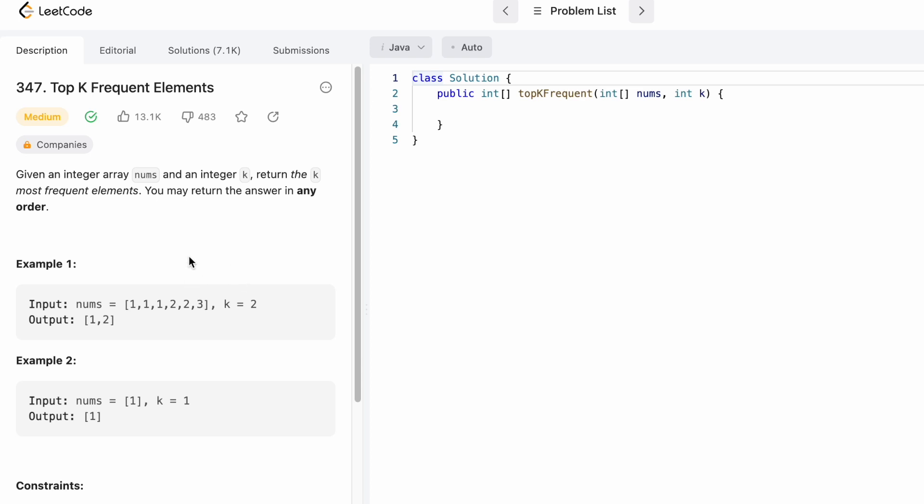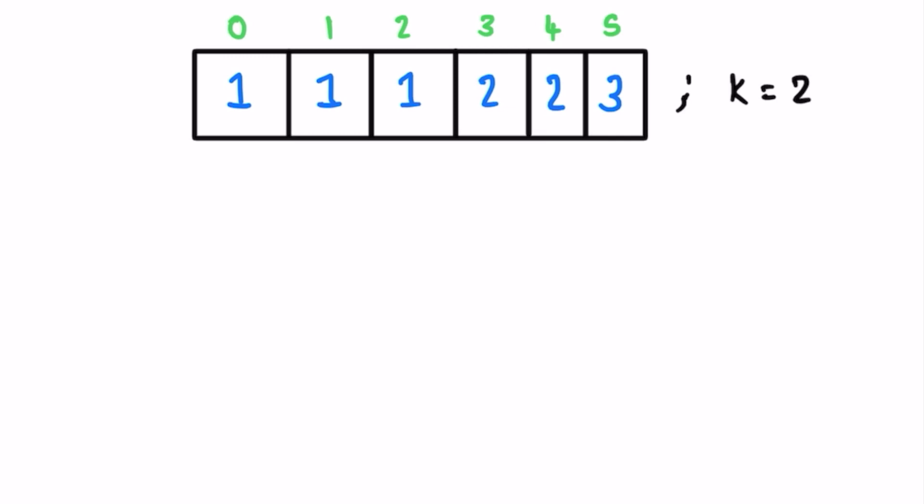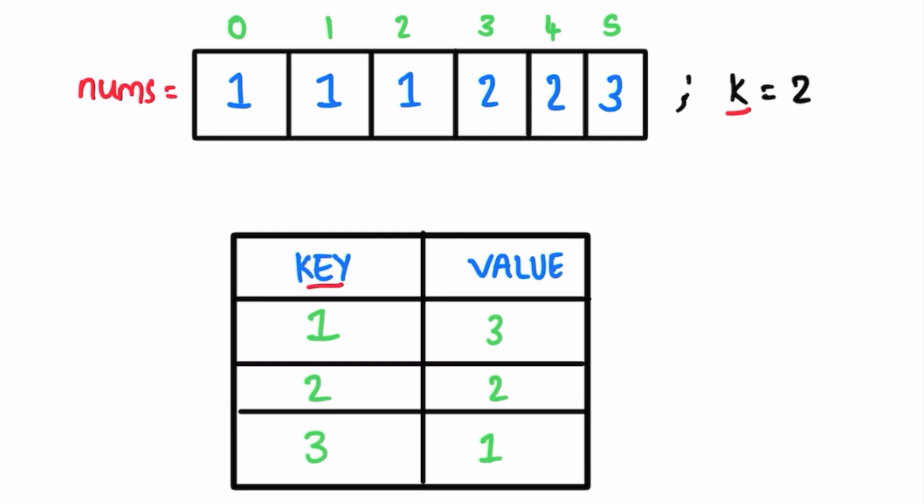Now let's look at how this question can be solved using the first example. The nums array and the integer k represent the number of elements we have to return. To find the count of each element, we'll use a hash map where the keys represent the array elements and the values represent their counts. After filling the hash map, 1 appears 3 times, 2 appears 2 times, and 3 appears 1 time. Note that hash maps do not maintain insertion order, so these rows might be jumbled in storage.